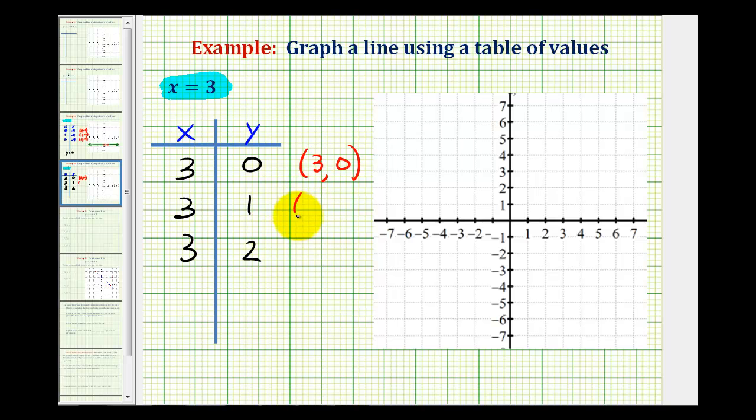The second row tells us that when the x coordinate is three and the y coordinate is one, this point would be on the line. And this last row tells us that when x is equal to three and y is equal to two, this would be a point on the line.